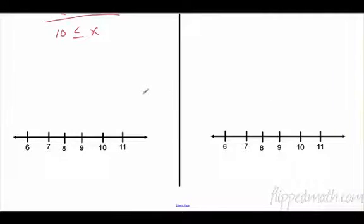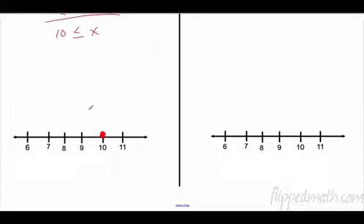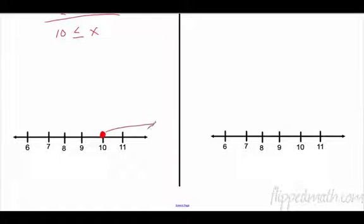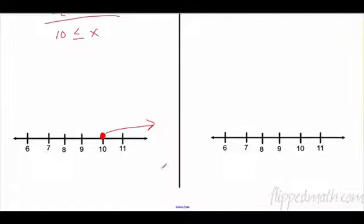Let's graph that. My boundary is at 10 — closed circle because it could be equal to it. I want all the numbers bigger than 10, so the arrow goes that direction.